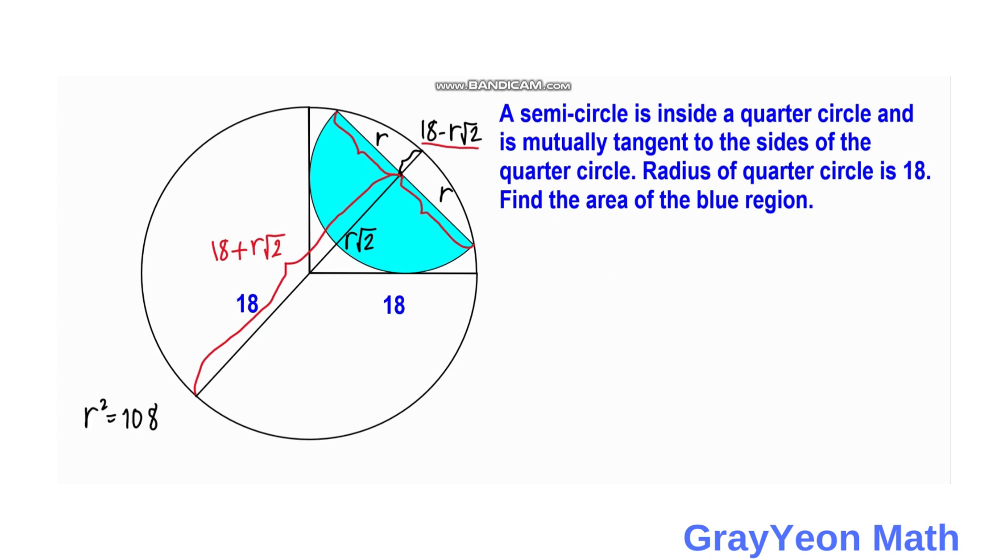So now for the final step we are now ready to find the area of this blue region, the semicircle. And that would be area is equal to pi times R square, but we need to divide this by 2 because this is a semicircle. And area is equal to pi times, since R square is equal to 108, then we just need to substitute it here and divide it by 2. So 108 divided by 2 would be equal to 54. So area is equal to 54 pi square units.